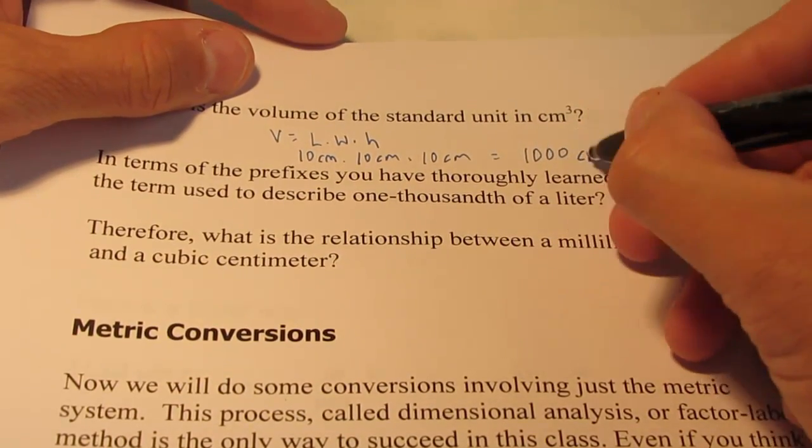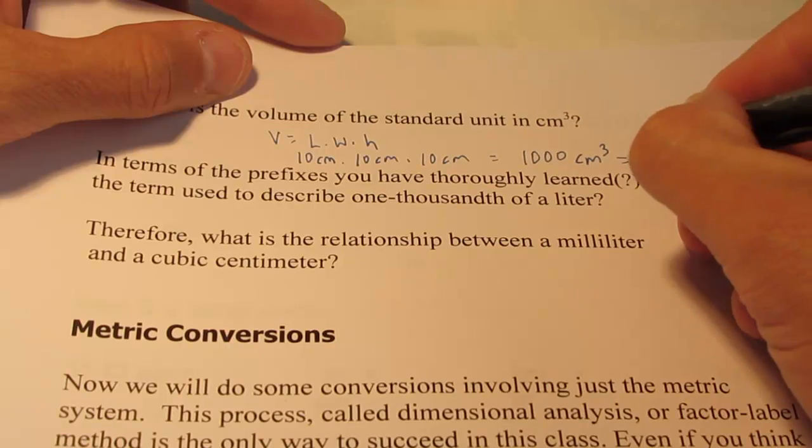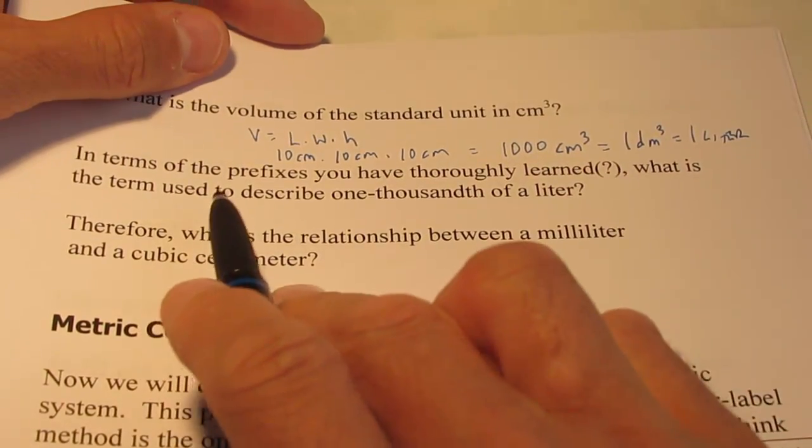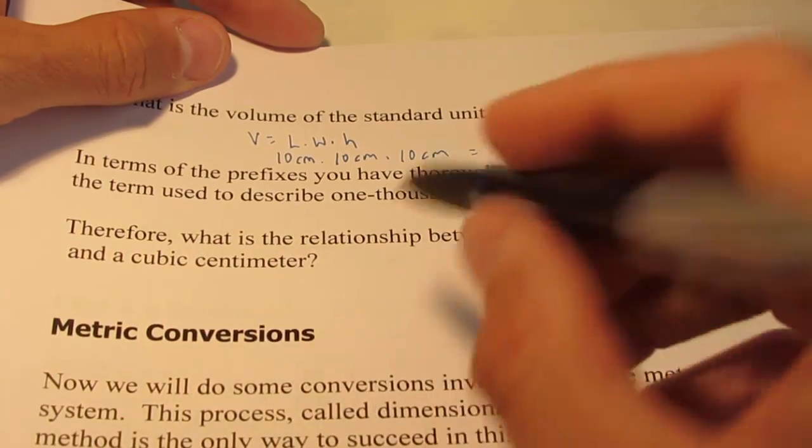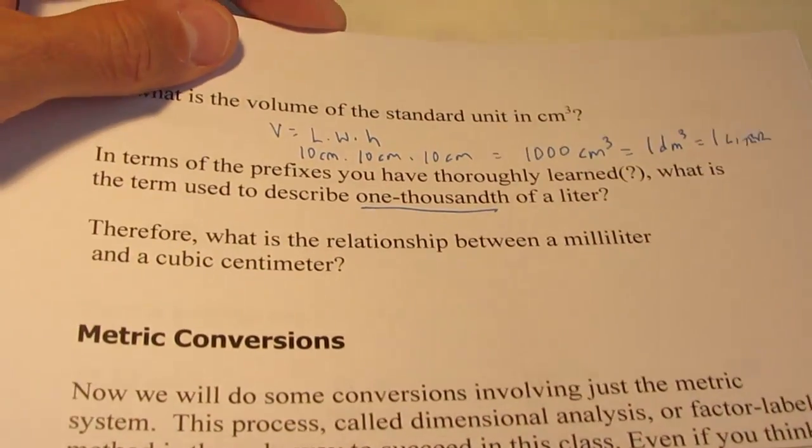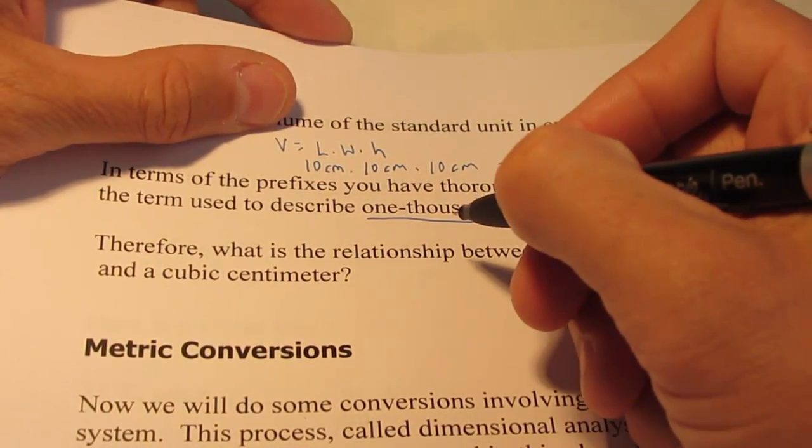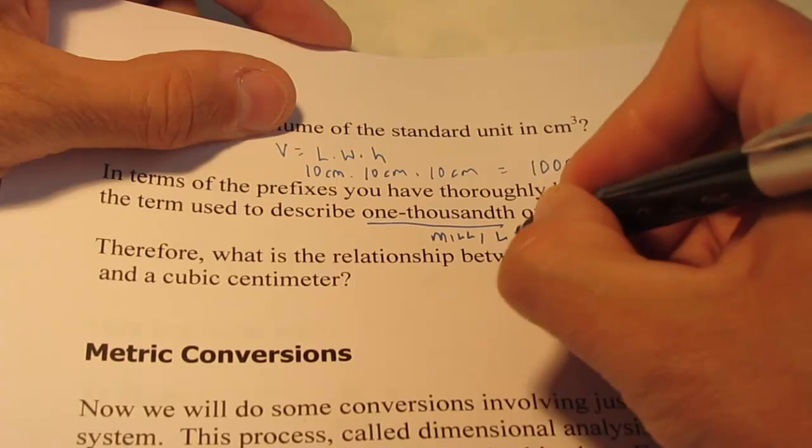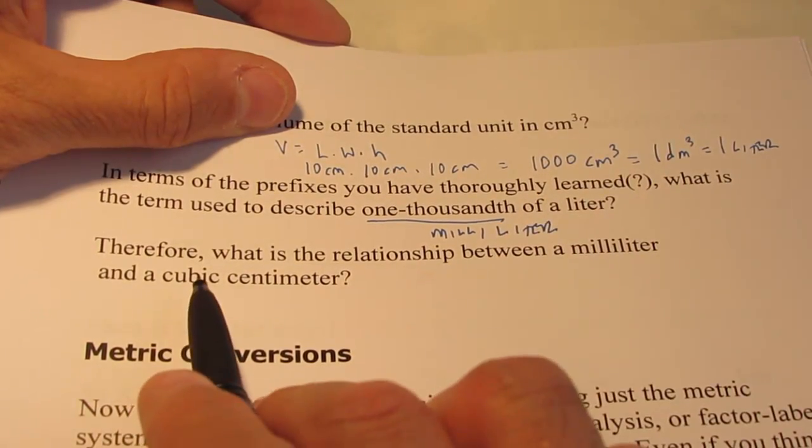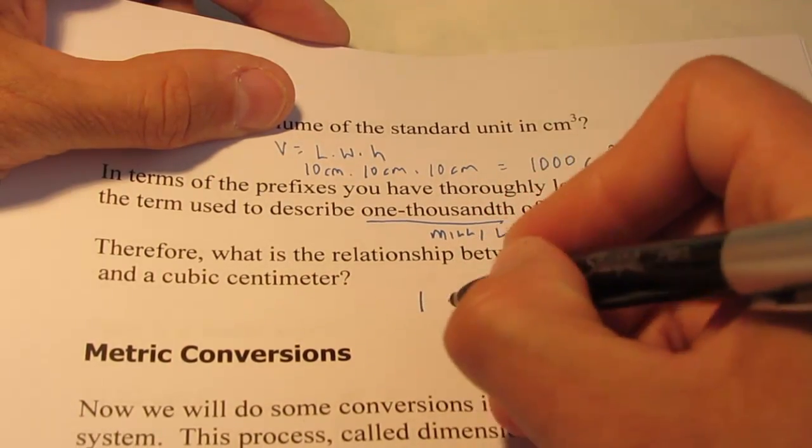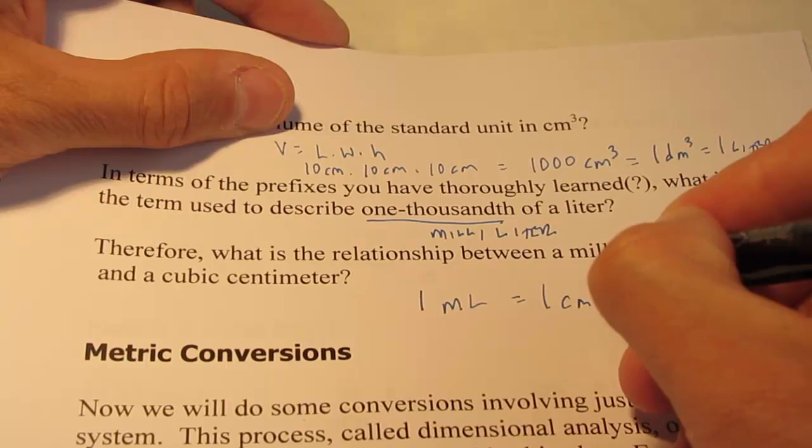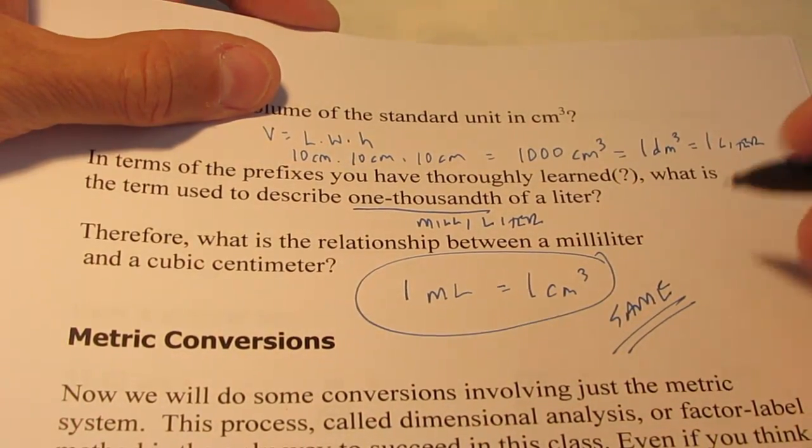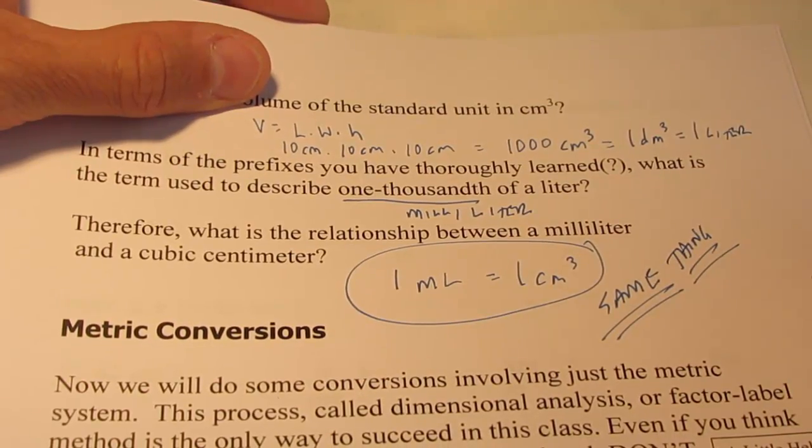Now, that cube, that's a thousand cubic centimeters, remember, is also a cubic decimeter, or we called it a liter, didn't we? So in the terms of the prefixes we've thoroughly learned, what is the term used to describe one one-thousandth of a liter? Well, if you look back on page 29, and those prefixes that you are to learn very soon, milli is the prefix for one-thousandth. So that's the same as a milliliter. Therefore, what is the relationship between a milliliter and a cubic centimeter? And they are the same. So a cubic centimeter and a milliliter are the same thing. They represent the same volume.